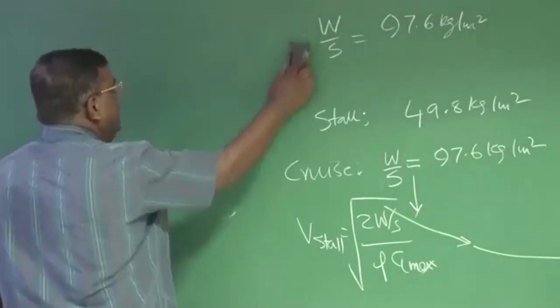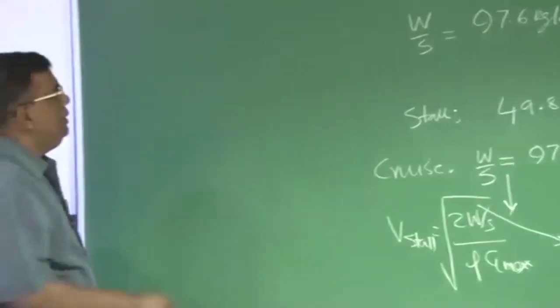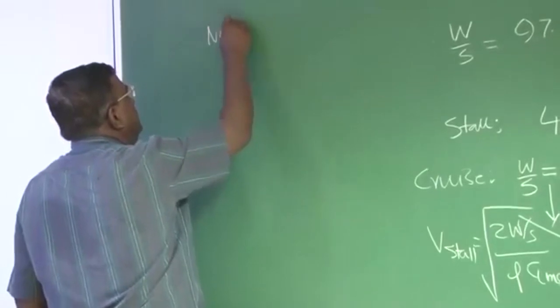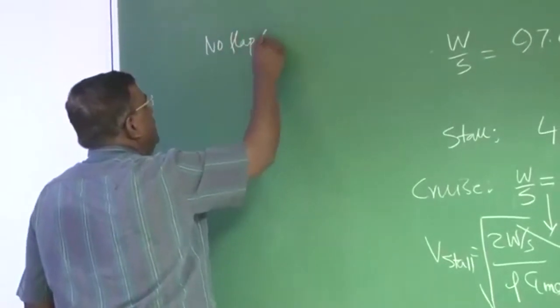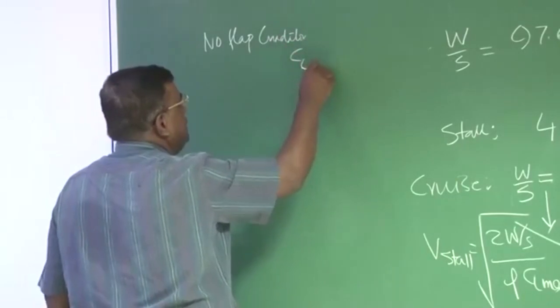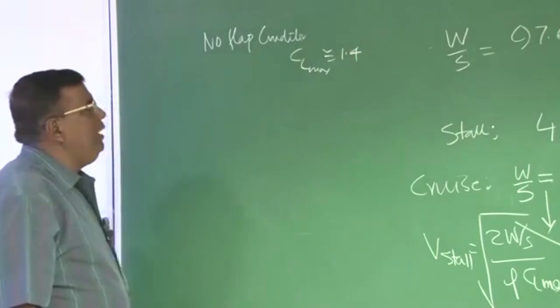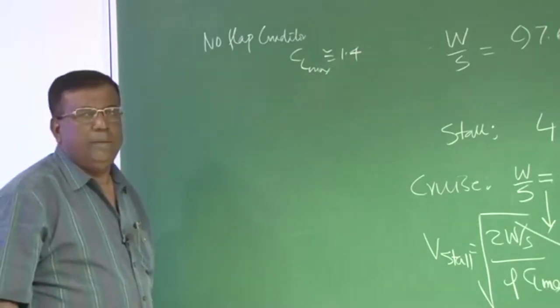If you see in the example of Raymer, they have used no flap condition. And they have taken C L max as 1.4, around that.